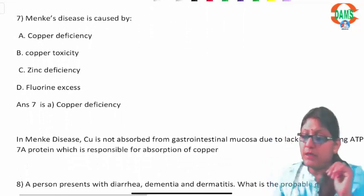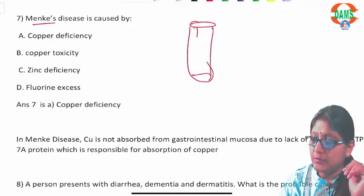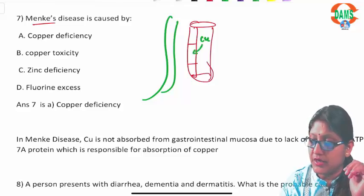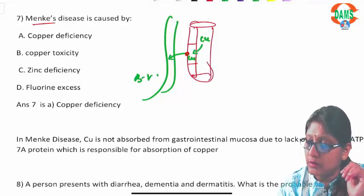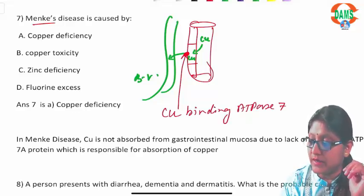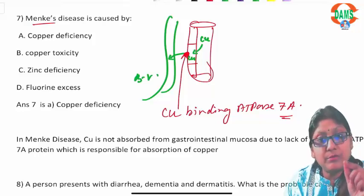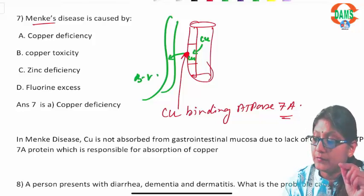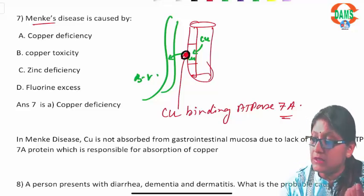Question seven: Menke's disease is a condition where the GIT mucosa lacks a transporter protein that absorbs copper. Copper is consumed and reaches the GIT mucosa, but to move from the mucosa to the blood vessels it requires a transporter at the basolateral membrane called copper-binding ATPase 7A. This transporter is responsible for copper transport from GIT mucosa into the blood vessels.